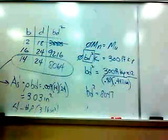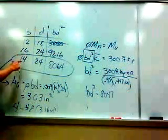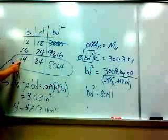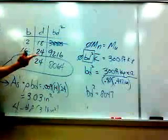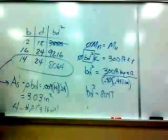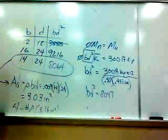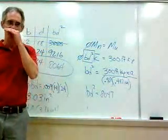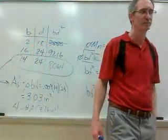So what this says, one design that would work would be a 14-inch wide beam with an effective depth of 24 inches. Again, realize that that probably means that you've got a 27-inch deep beam or so, overall depth. Use four number eights with our other parameters there of concrete strength and steel strength. So, questions?